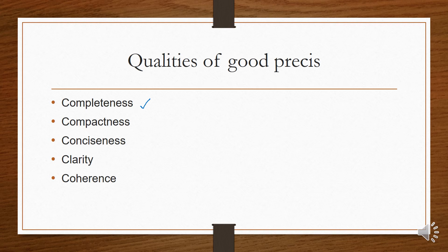The next quality is compactness. We need to create a short paragraph for a lengthy paragraph — a main lengthy idea defined in a shorter way — which is called compact. But all the ideas should still be present in it.